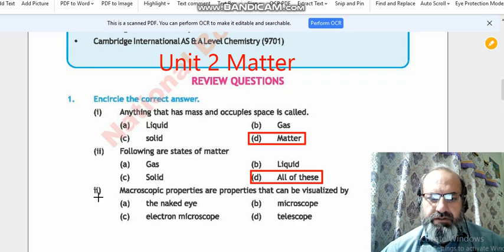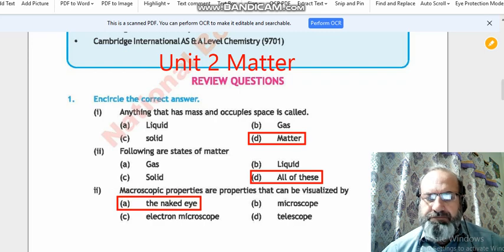This is number 3. Microscopic properties are properties that can be visualized by the naked eye, microscope, electron microscope, or telescope. And the answer is option A because these can be visualized by the naked eye.